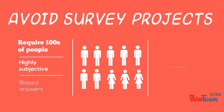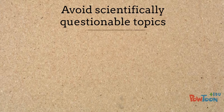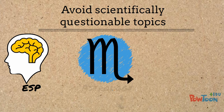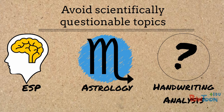People often give biased answers based on what they believe is right or desired, and not based on reality. Avoid topics of questionable or no scientific validity, such as ESP, astrology, or handwriting analysis.